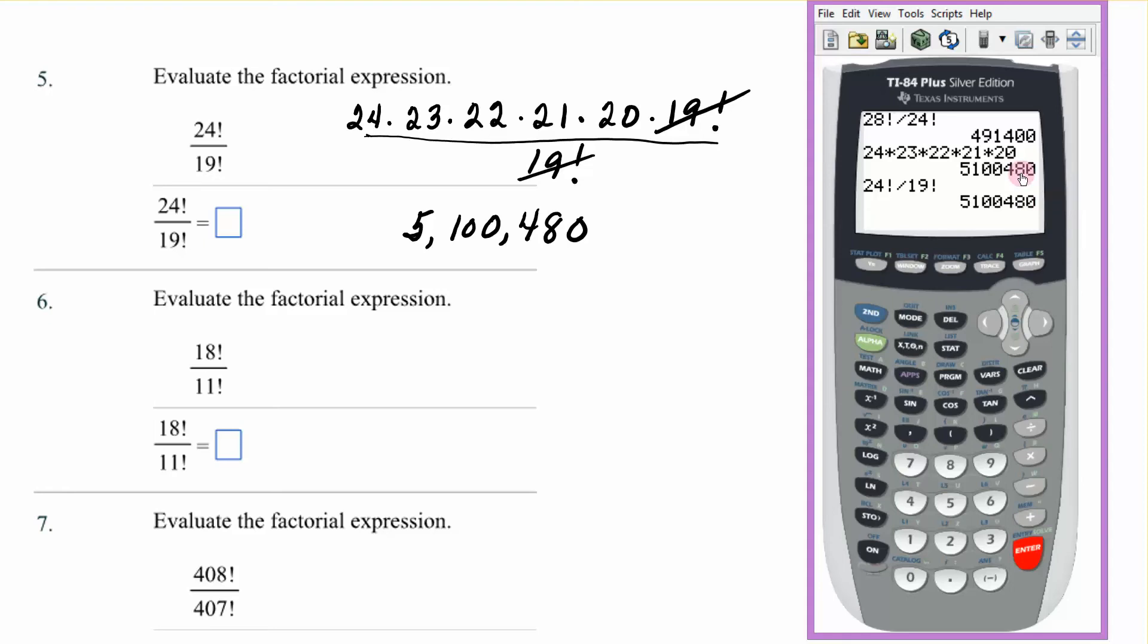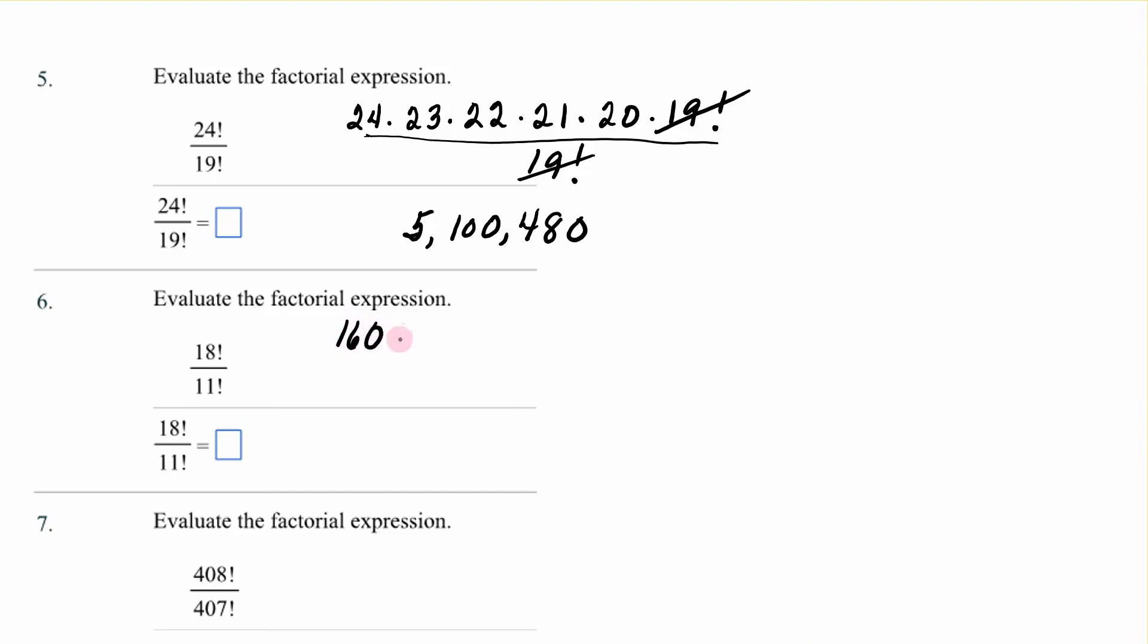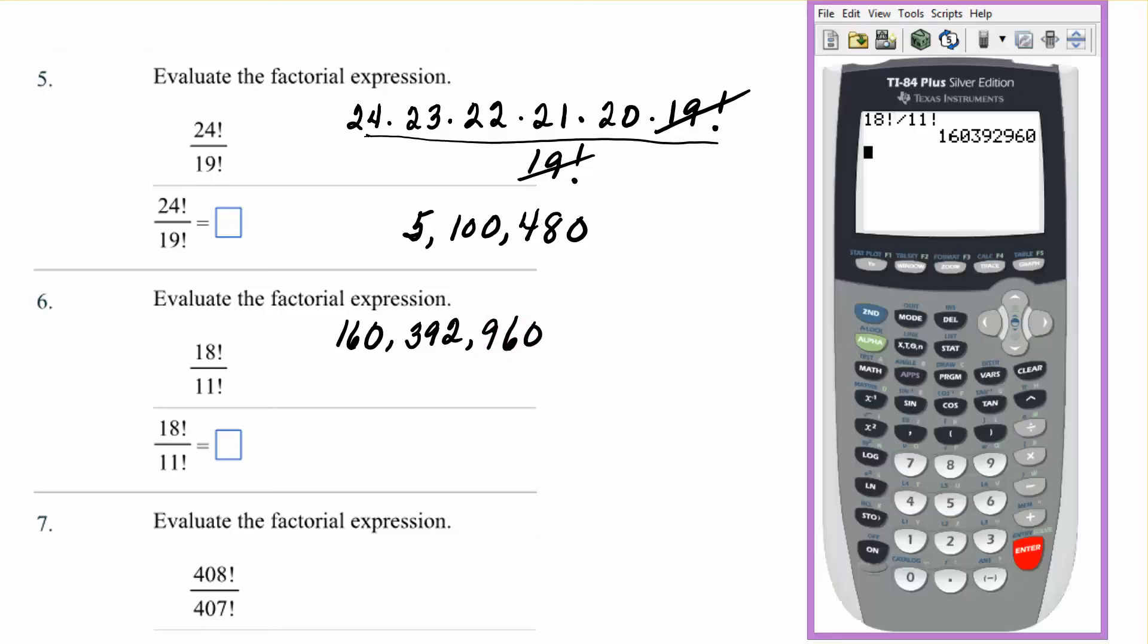Number 6. All right. I have, I'm going to clear this. I have 18 factorial, so math, 4. That's 18 factorial divided by 11 math, factorial. Enter. Wow. It is 160,392,960.